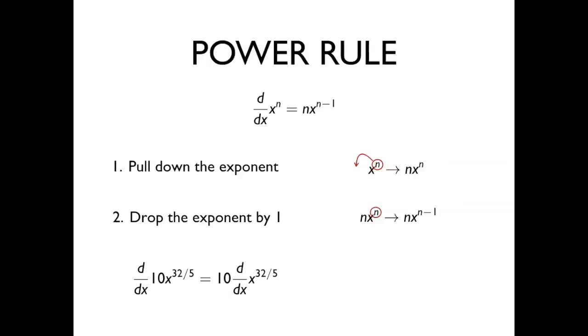Applying the power rule to this, we get 32 over 5 as a coefficient and the exponent is now 32 over 5 minus 1.